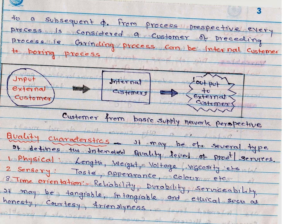Some characteristics are sensory. For example, if we are making tomato ketchup, customers test that product by taste. If purchasing a TV, we look at the appearance — what type of colors appear in the picture. So taste, appearance, and color are sensory characteristics. Time-oriented characteristics include reliability, durability, and serviceability, which we discussed earlier.